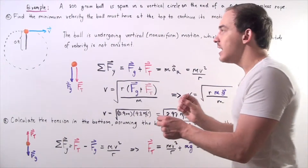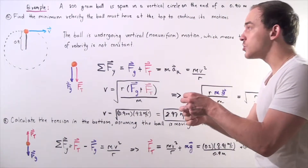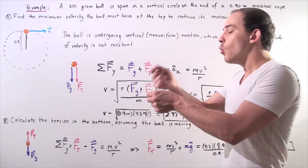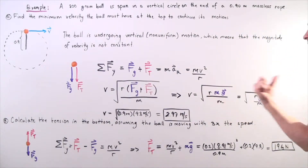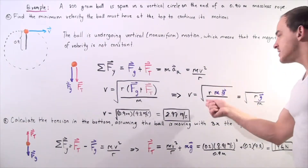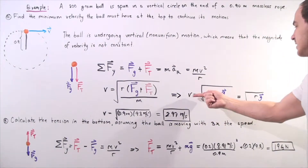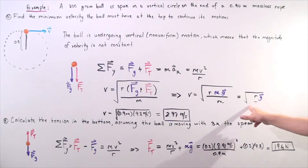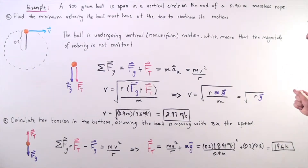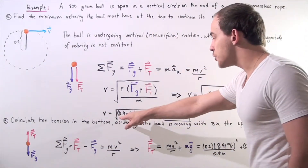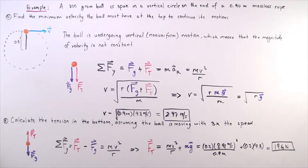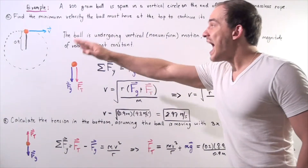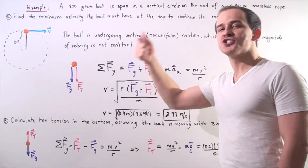The minimum velocity means tension equals zero at the top — we want the minimum speed such that there is just no tension in the rope. Setting tension to zero, we get velocity equals the square root of R times g. The masses cancel, leaving v = √(R × g) = √(0.9 × 9.8) ≈ 2.97 meters per second. That's the minimum velocity the ball must have at the top of the arc to continue circular motion.